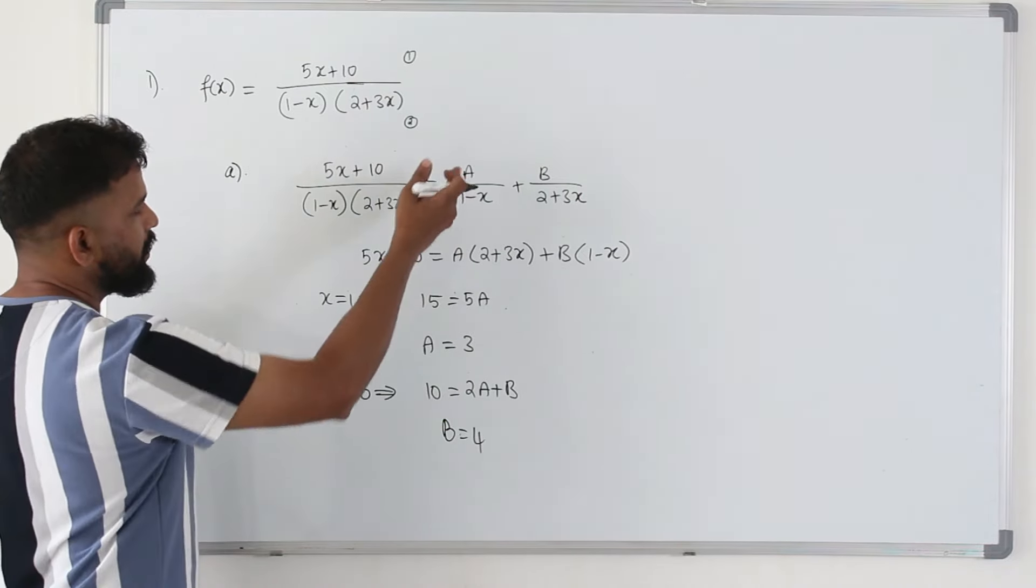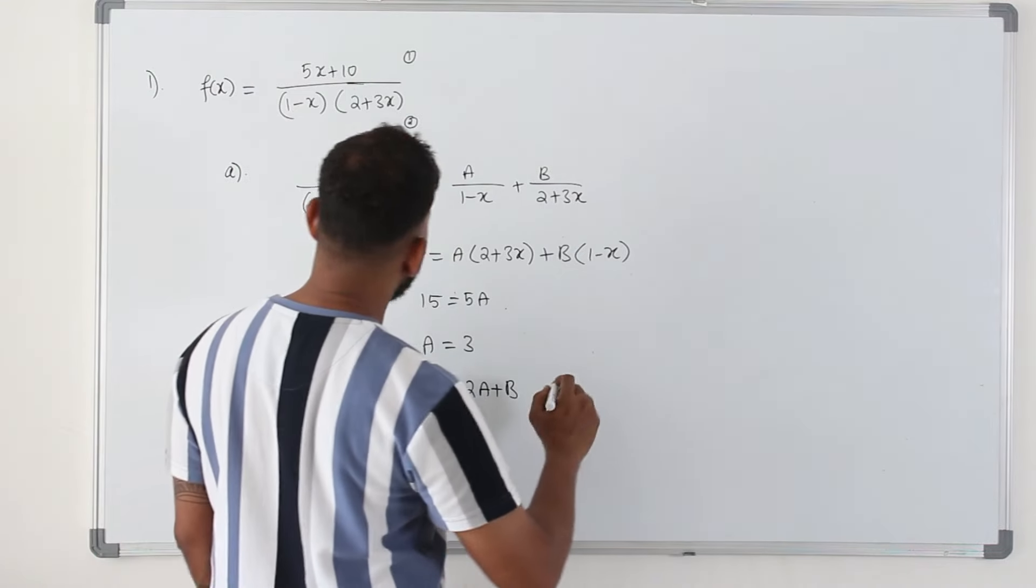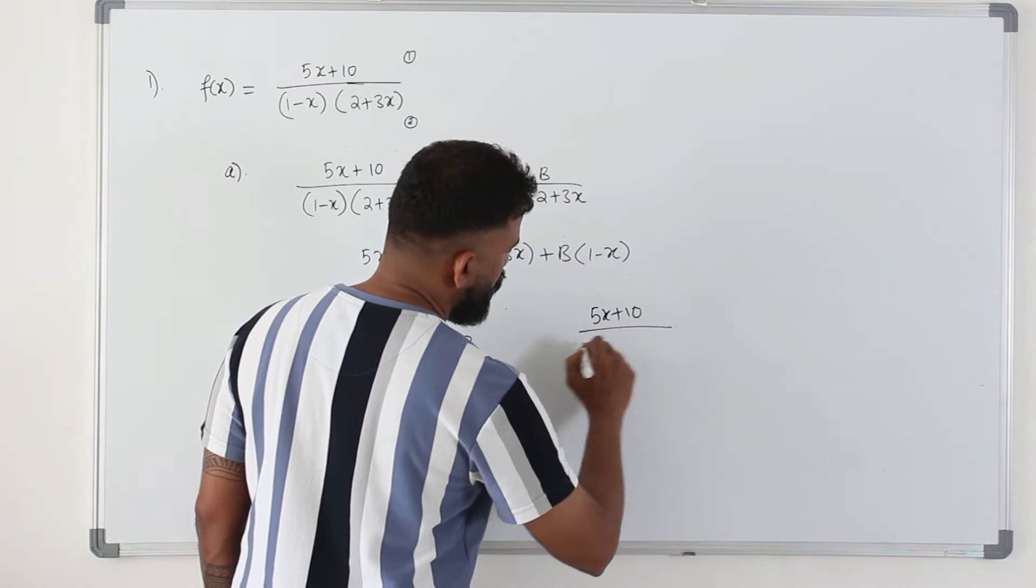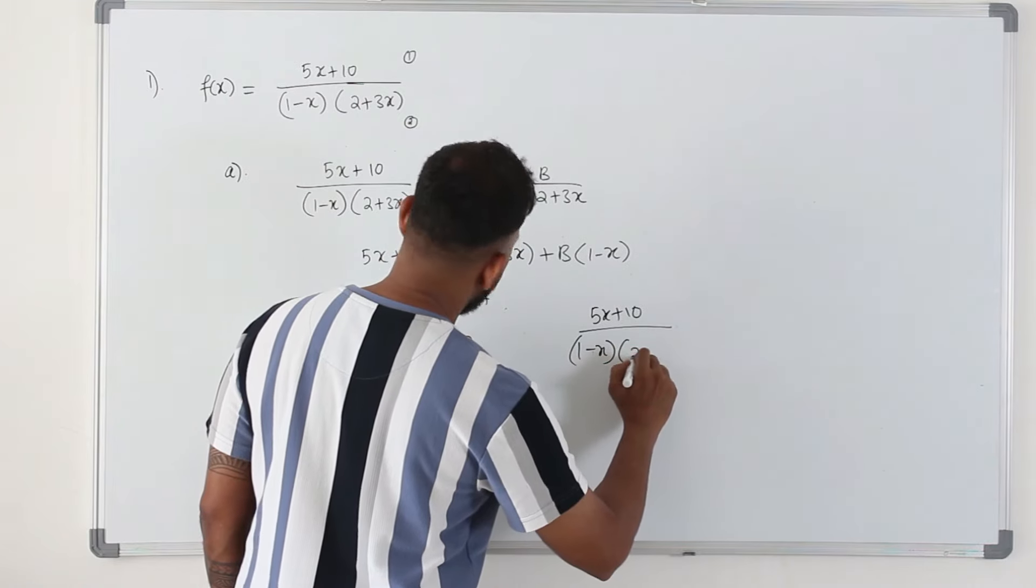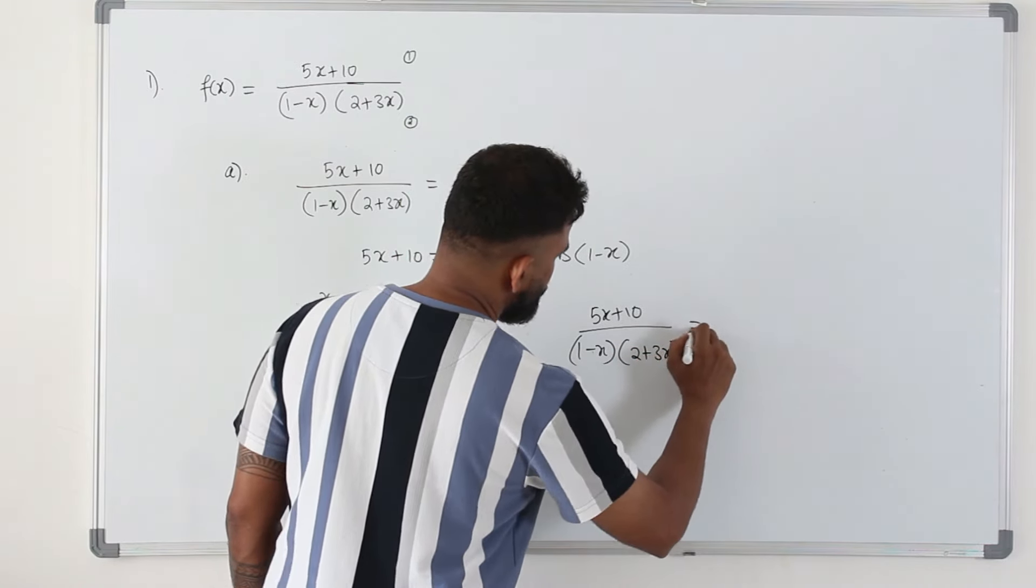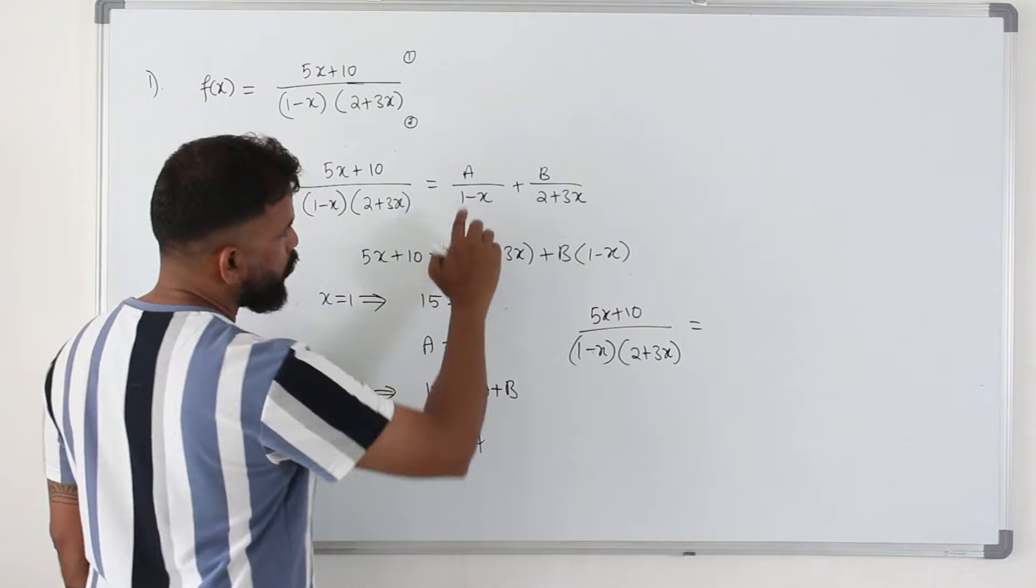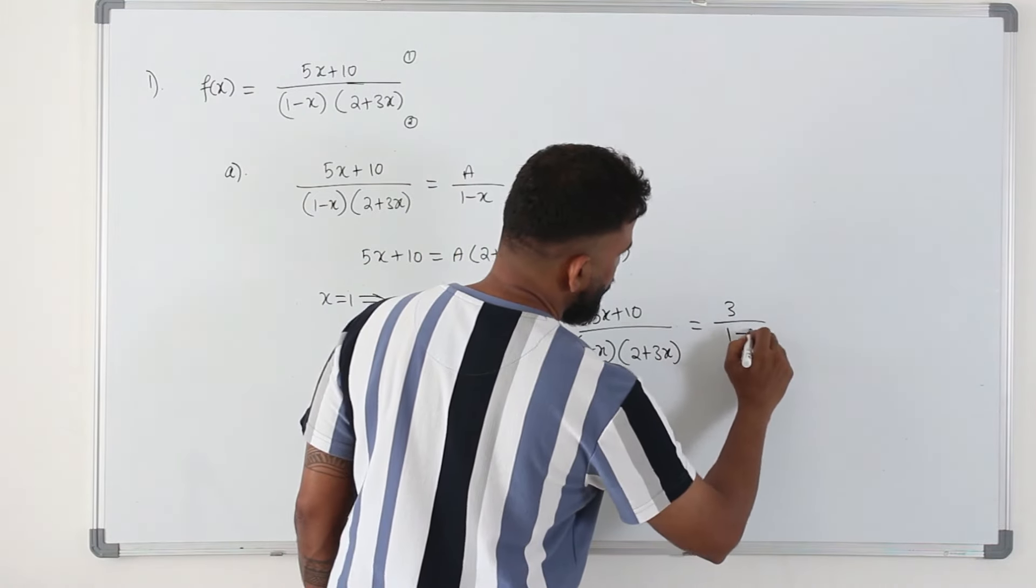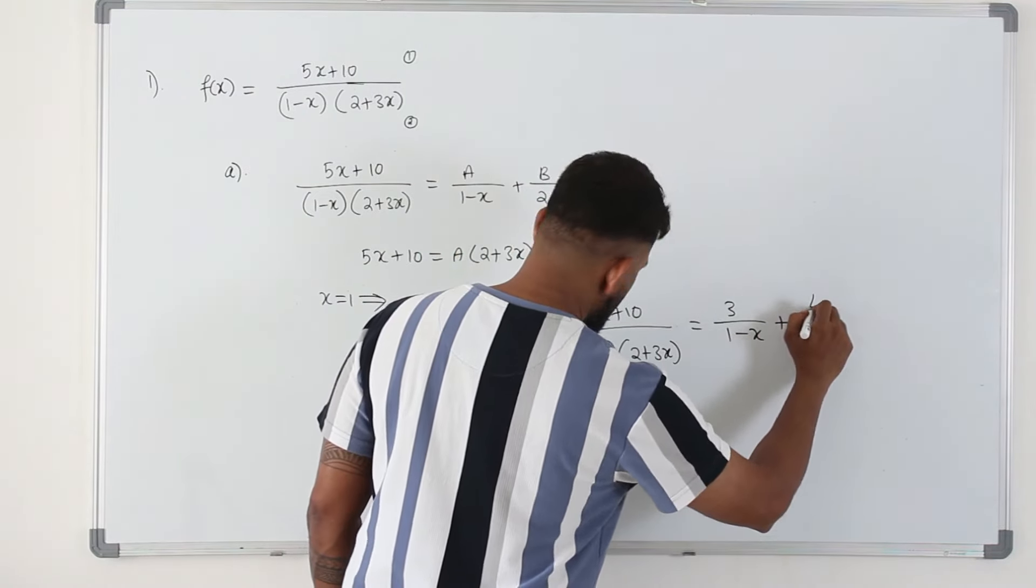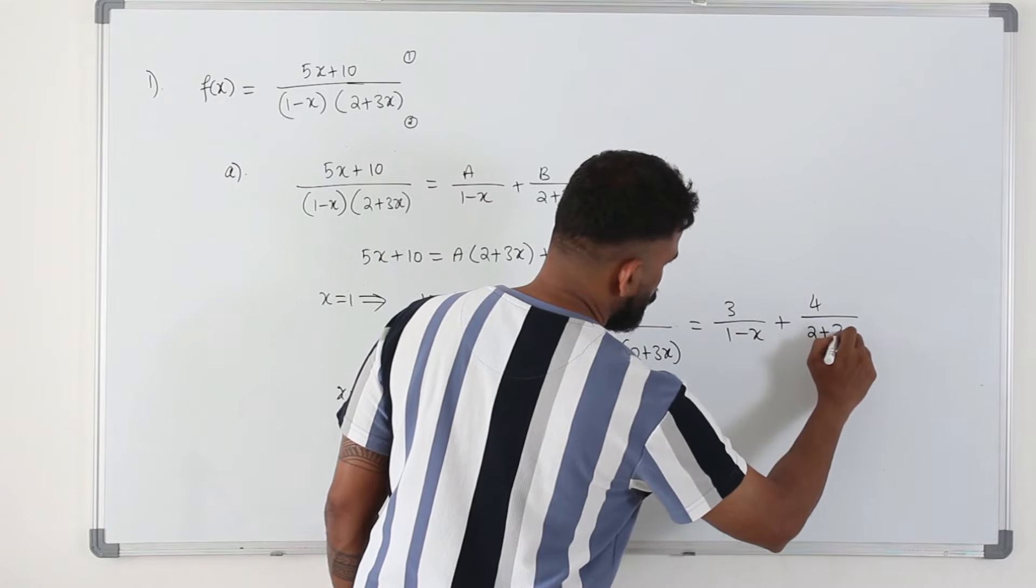So submit back in here, write one more step. So 5x plus 10 over 1 minus x times 2 plus 3x is equal to a over 1 minus x, b over 2 plus 3x.